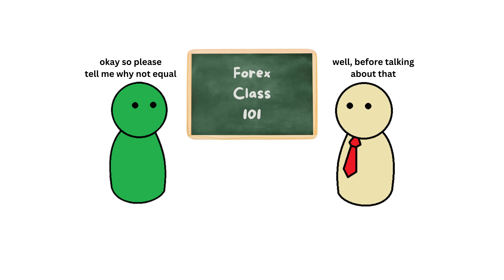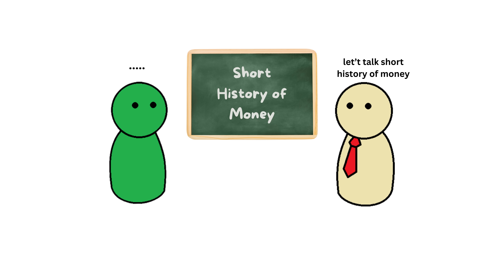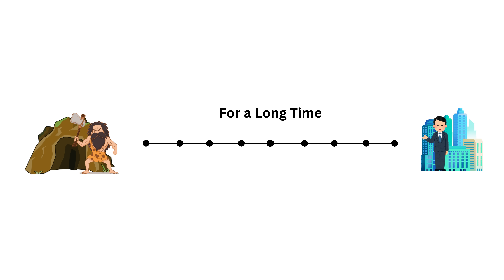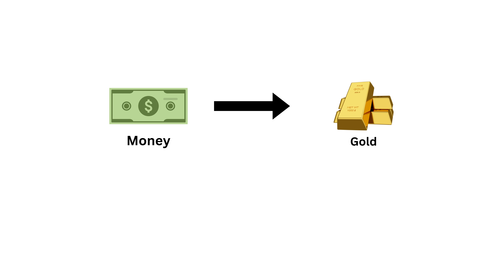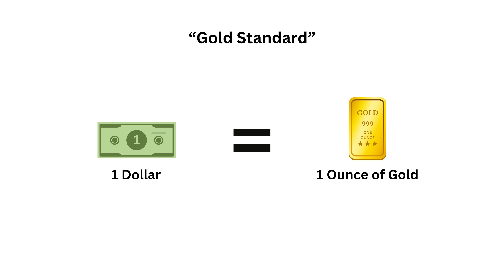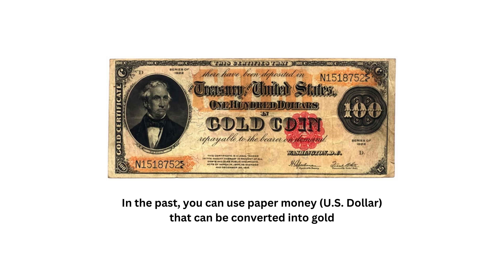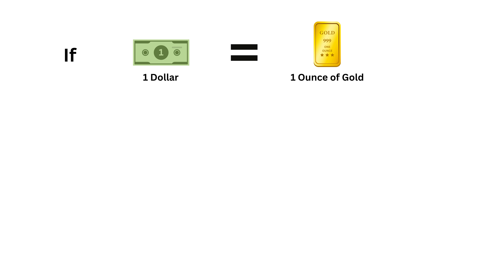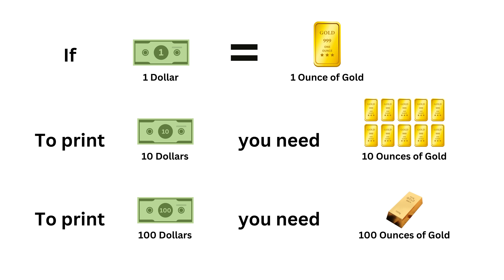Before we talk about the reasons behind different currency values, let's first cover a short history of currency. For a long time, money was directly linked to precious metals like gold. This was known as the gold standard. Under the gold standard, a country's currency was backed by a certain amount of gold. For example, the U.S. dollar was once tied to a fixed amount of gold.